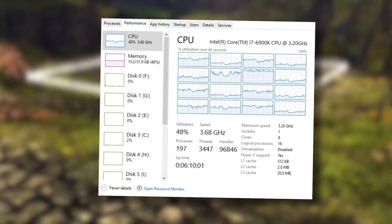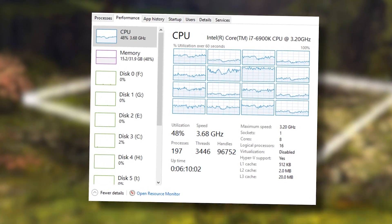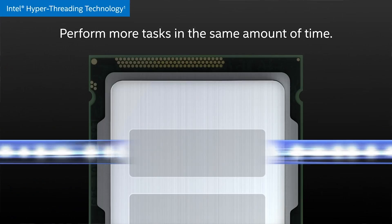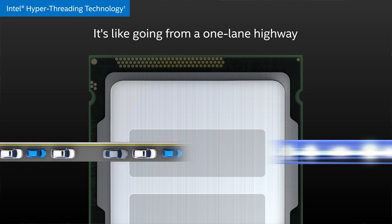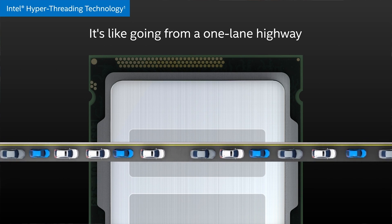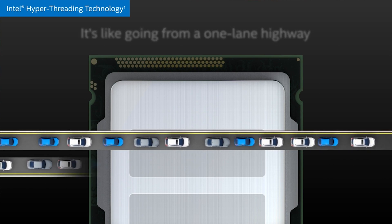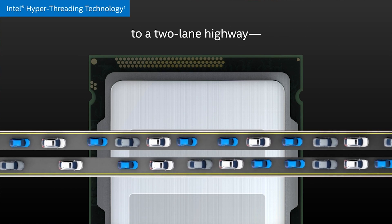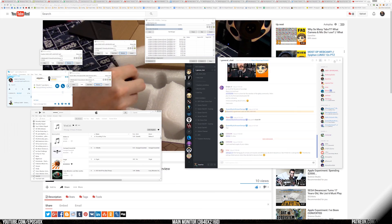Mega-tasking is best done on a multi-core CPU with hyper-threading, like Intel's latest Core i7 processors. Hyper-threading makes the operating system and applications think that there are more CPU cores than there actually are, allowing it to do twice as many processes simultaneously. A 6-core actually looks like a 12-core and can handle twice as many processes as a processor without hyper-threading.